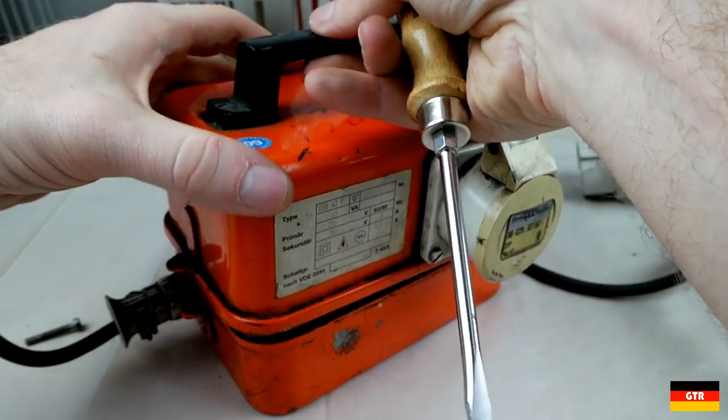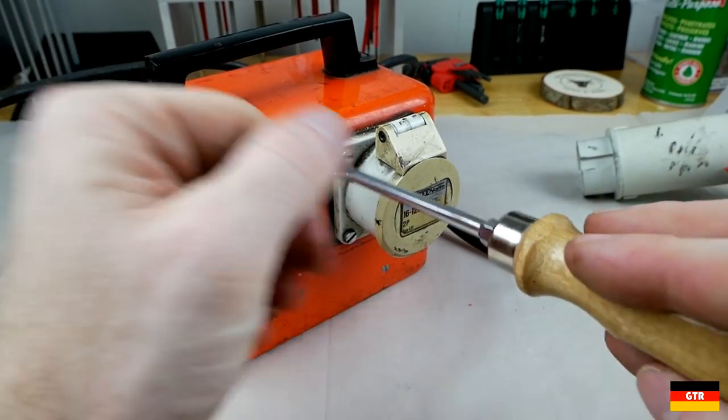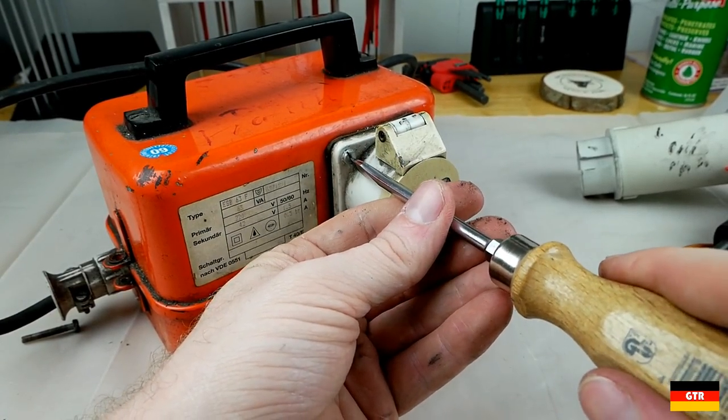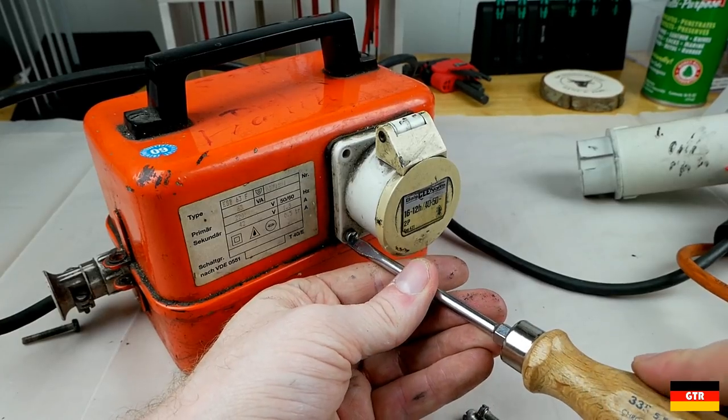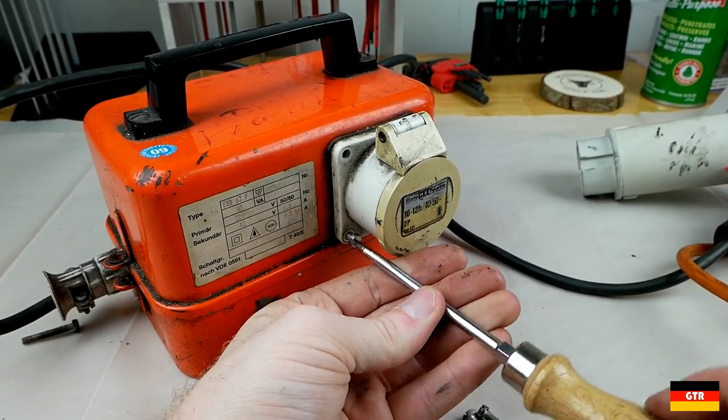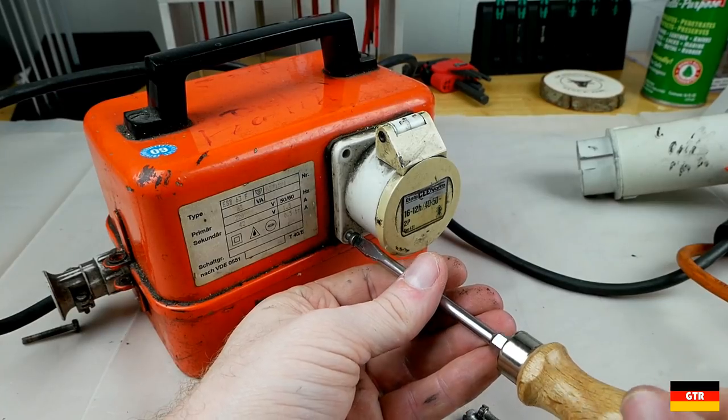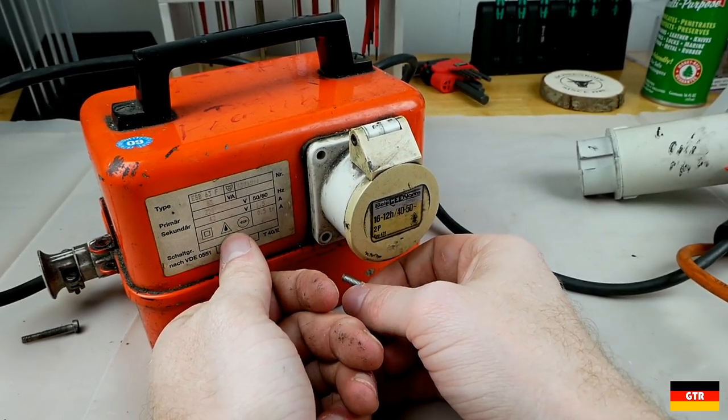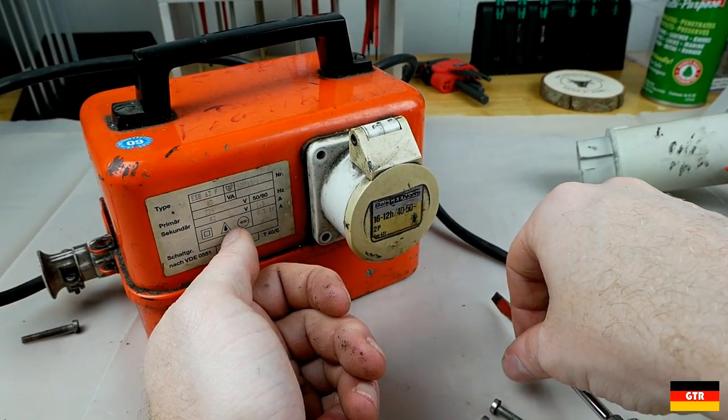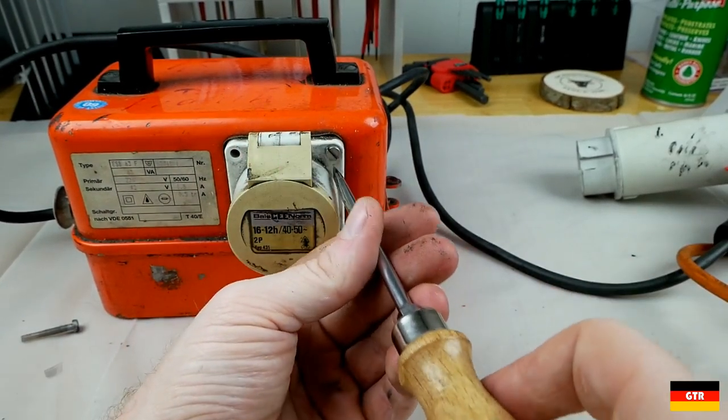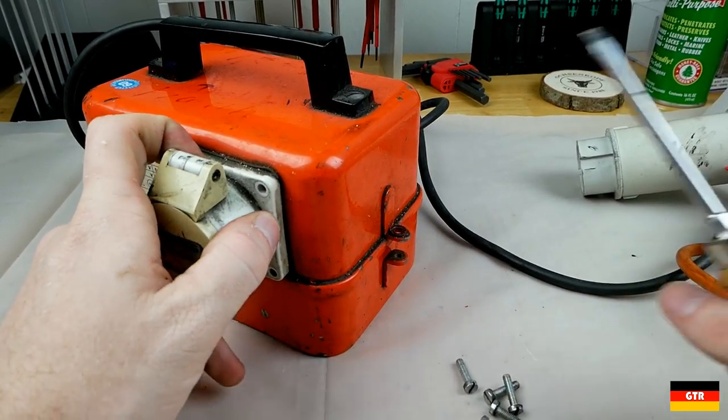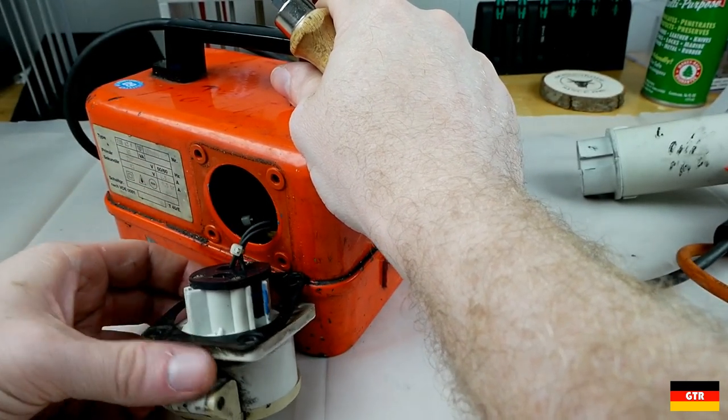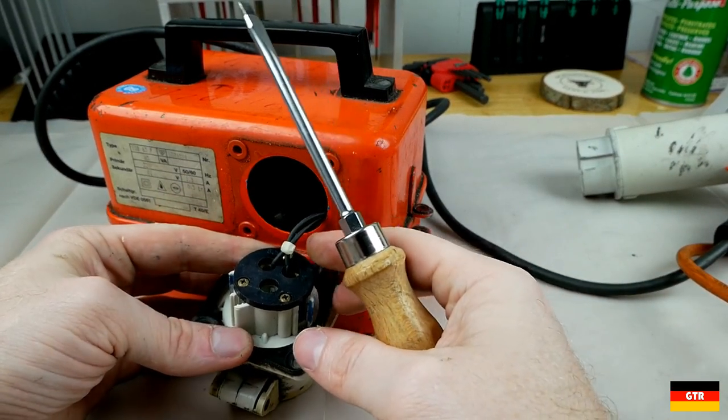It looks like we actually got some circuitry down in here. Alright, so what I'm going to do is I'm going to take this off first so we can disconnect this connector. You can tell it really was designed to be beat up. It's got rubber gaskets everywhere.